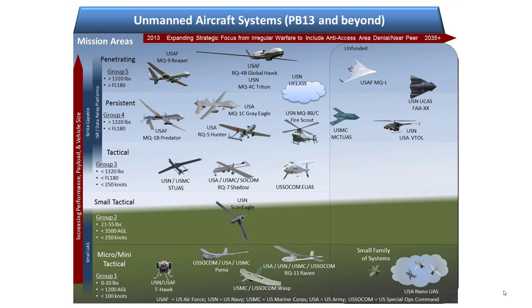Even within the group system, there's additional nomenclature that adds confusion. Group 1 is also referred to as micro/mini tactical UAS, group 2s are small tactical, group 3s are tactical, group 4s are persistent, and group 5s are penetrating. Additionally, on the far left side of the chart, groups 1 and 2 are considered small UAS, while group 3 and above is what they call strike capable, meaning they can carry some type of weapon system for use in combat.